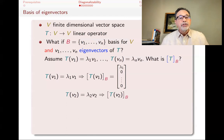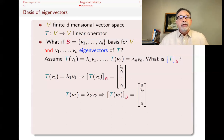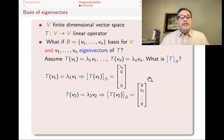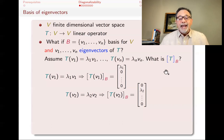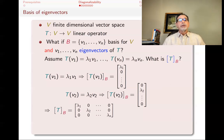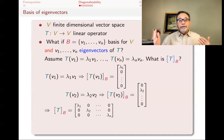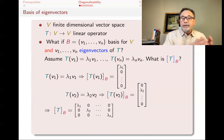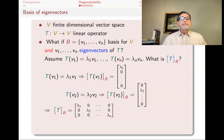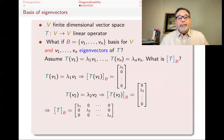Similarly, T(V2) = λ2·V2, so its coordinates with respect to B are (0, λ2, 0, ..., 0). This repeats for each basis element, and each coordinate vector becomes a column of the matrix of T with respect to B. The result is a diagonal matrix — one where all off-diagonal entries are zero, with the eigenvalues λ1 through λN on the diagonal. This is a very useful form, for instance when computing repeated applications of T.